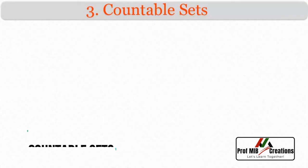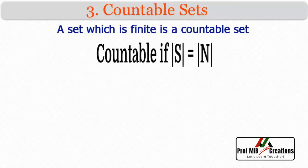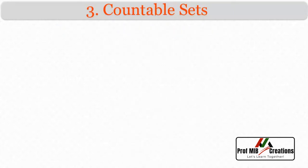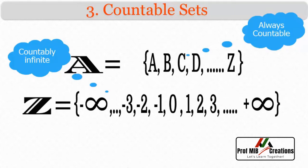Next is countable sets. A set which is finite is a countable set. More formally, a set S is countable if its cardinality is equal to some natural number N — meaning there is a one-to-one mapping from natural numbers onto the elements of S. A finite set like the set of English alphabets is always countable. However, an infinite set may or may not be countable. For example, the set of all integers is countably infinite — it has an infinite number of elements but its cardinality maps to natural numbers.